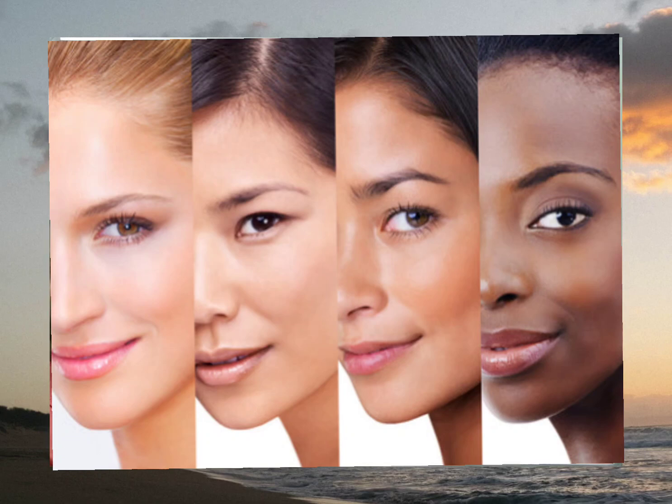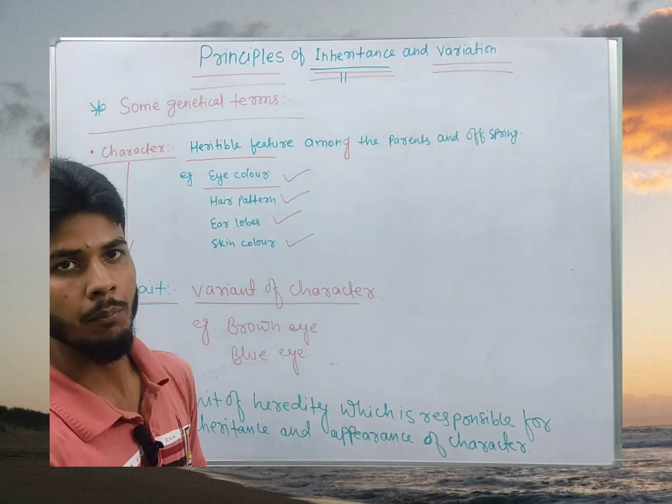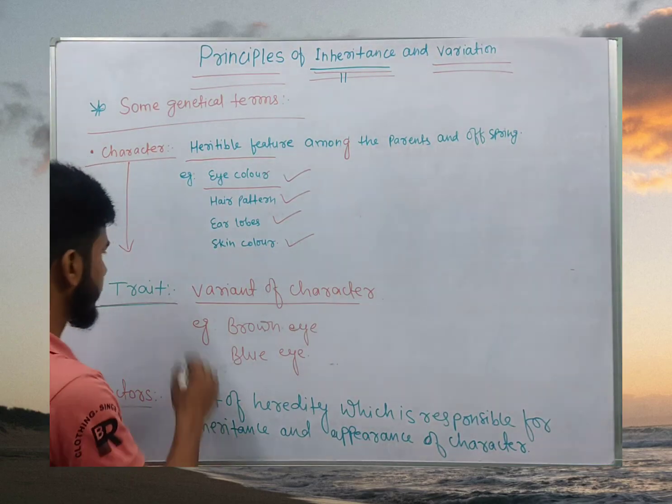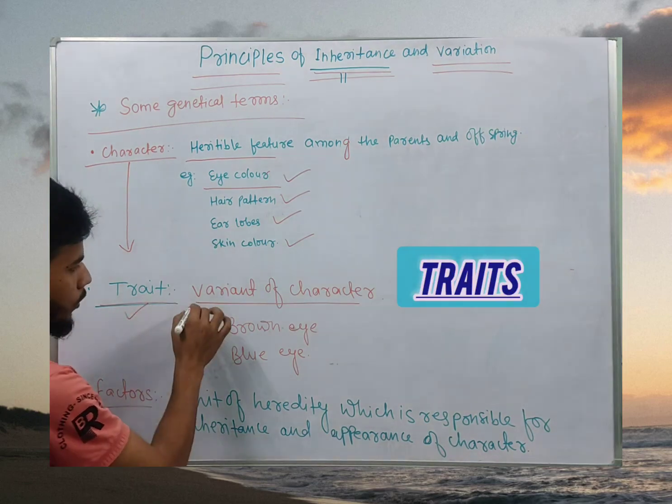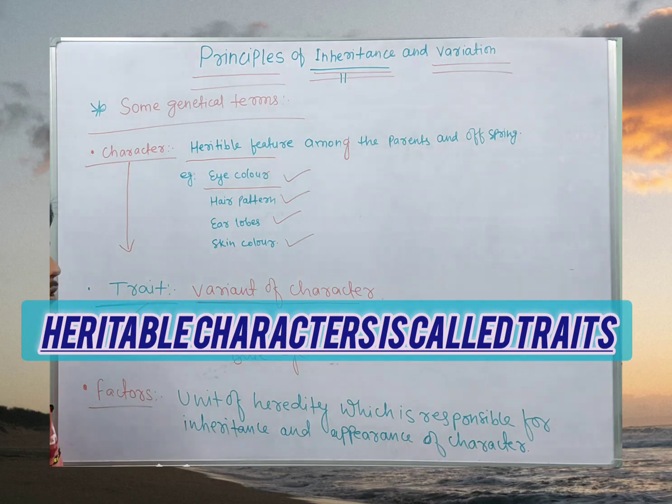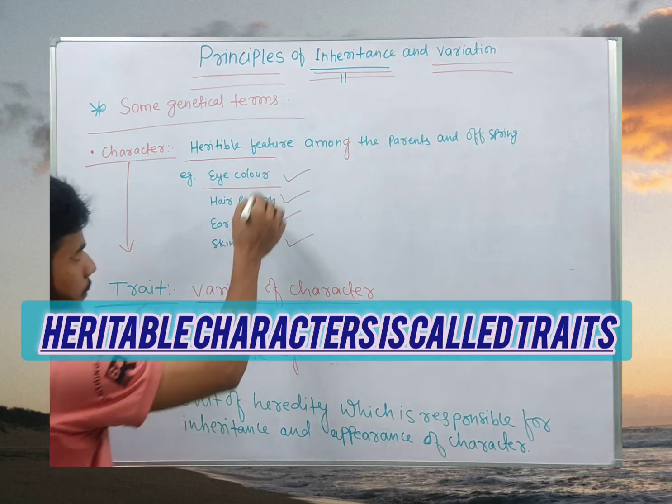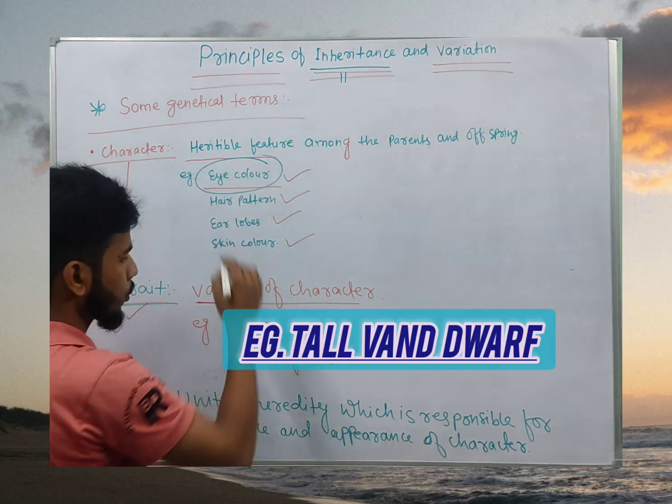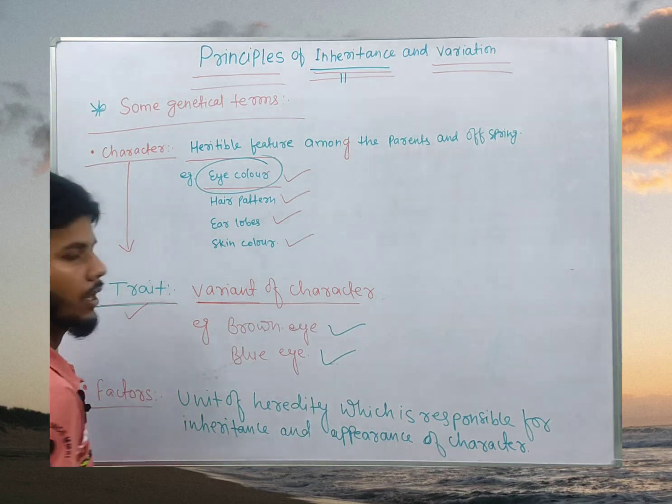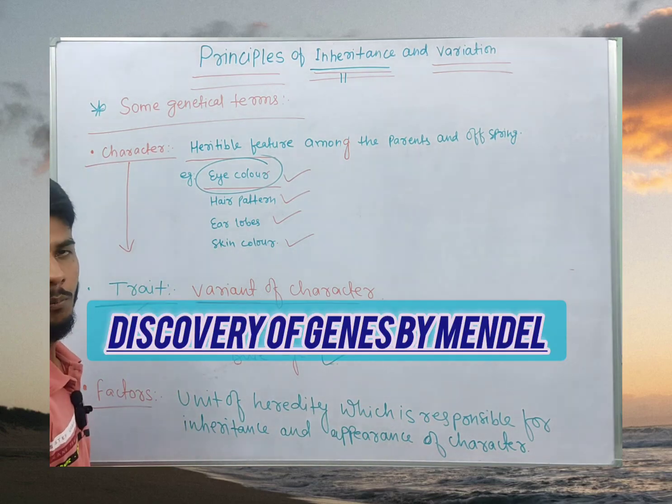In next ishika alag form kya bolte hain, trade bolte hain, variants of different character, variants of character kya bolte hain, trade. Jayse agar hain kya liya eye color liya, so eye color map ke paas brown eyes ho sakti hain, blue eyes ho pya, and black eyes be.